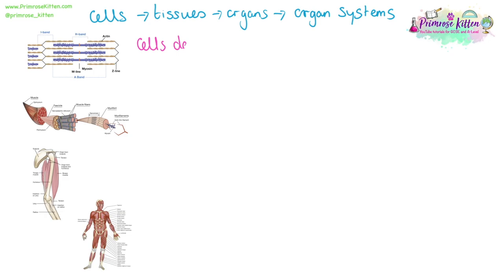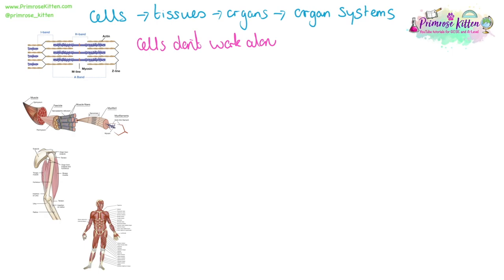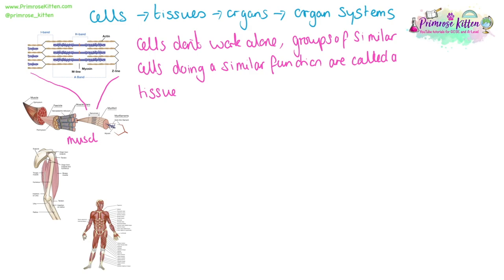There is a hierarchy starting with cells, tissues, organs, and organ systems, because cells do not work alone. If we have a group of cells with a similar function, this is a tissue — for example, these cells all working together as muscle tissue. There are lots of different types of tissues within a body, such as connective tissue, muscle tissue, nerve tissue, or epithelial tissue.